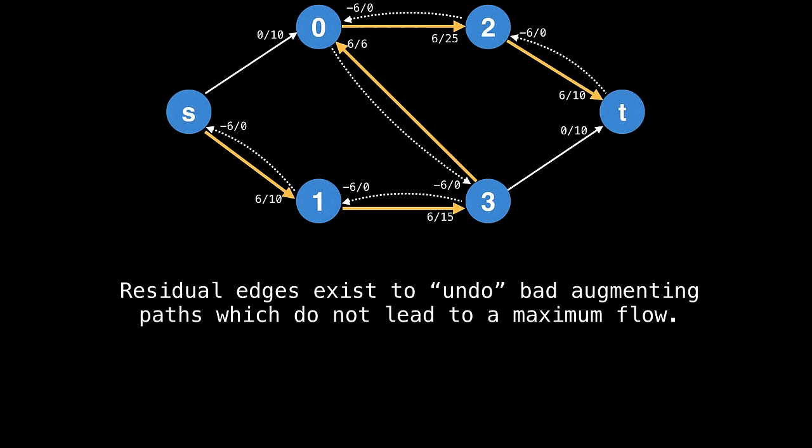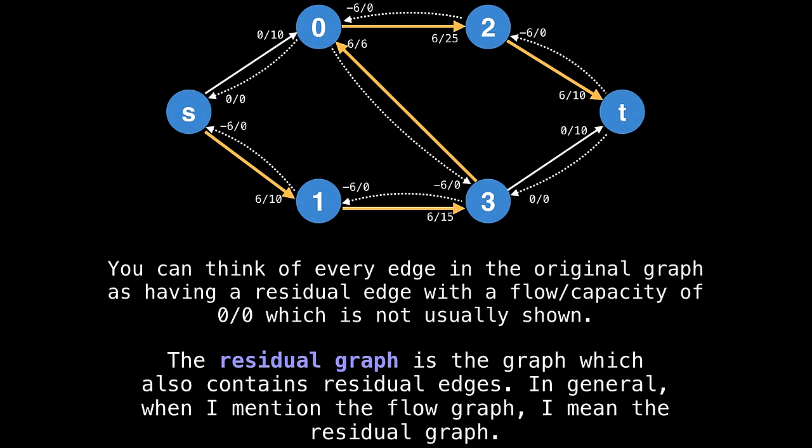Effectively, we don't know which are the best or even correct augmenting paths to take. So this mechanism enables us to freely find any augmenting paths without having to worry about whether or not we'll be able to achieve the maximum flow. It should be mentioned that residual edges become valid edges to take when finding an augmenting path in later iterations. So if we take a step back, you can think of every edge in the original graph as having a residual edge with a flow and capacity of zero, which is not usually shown.